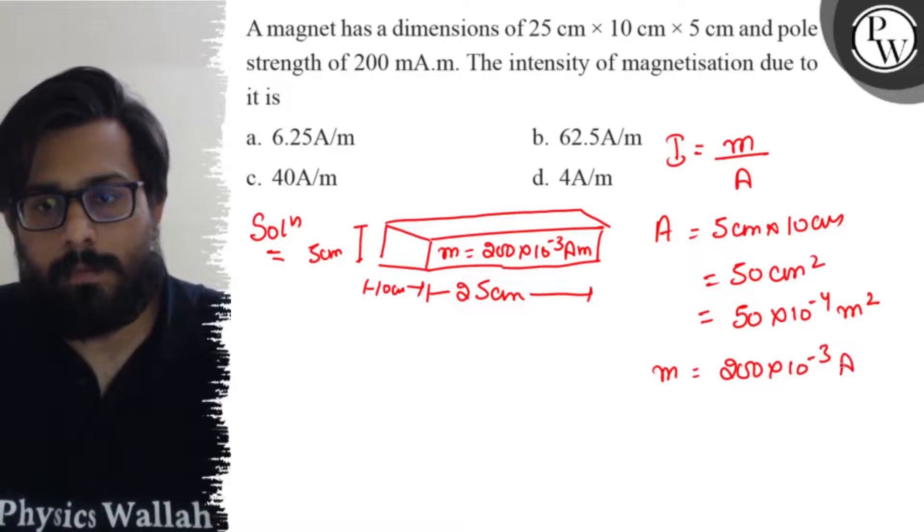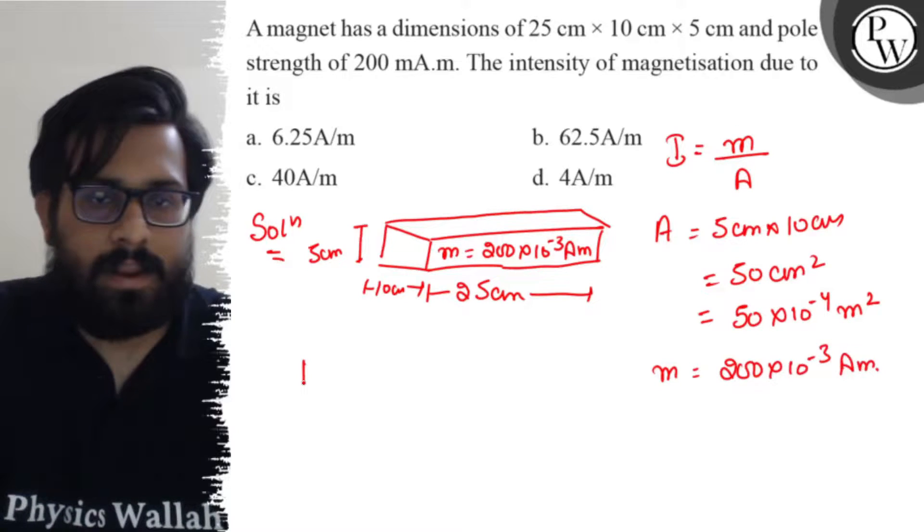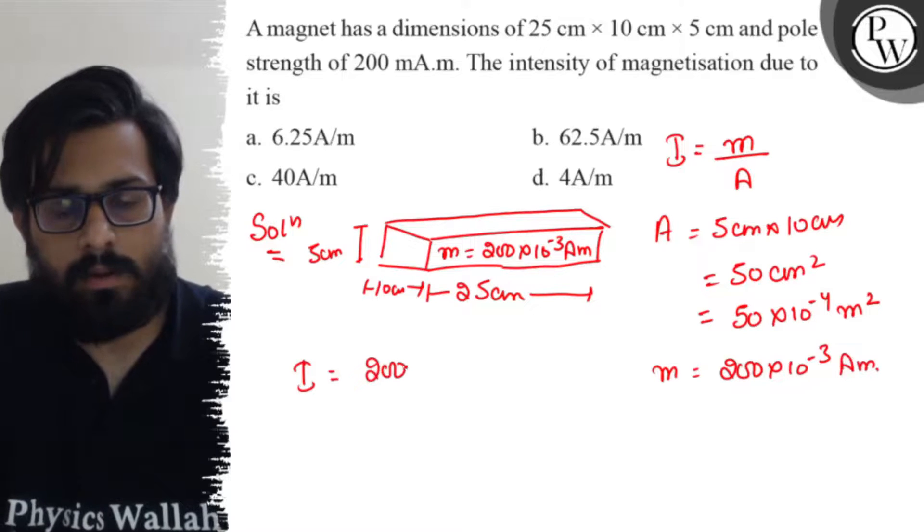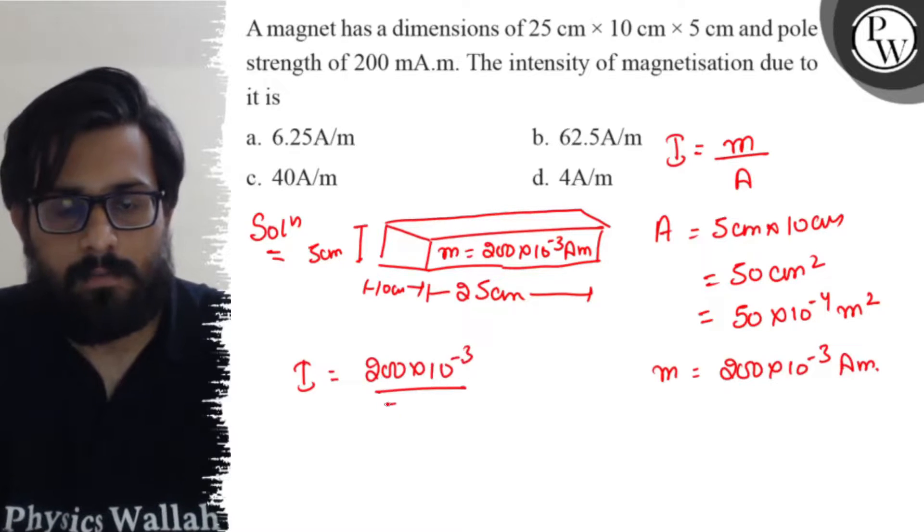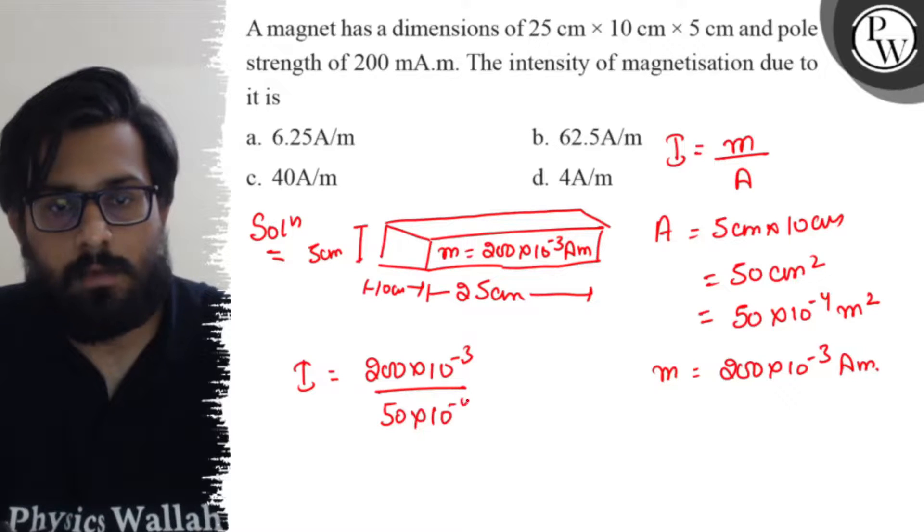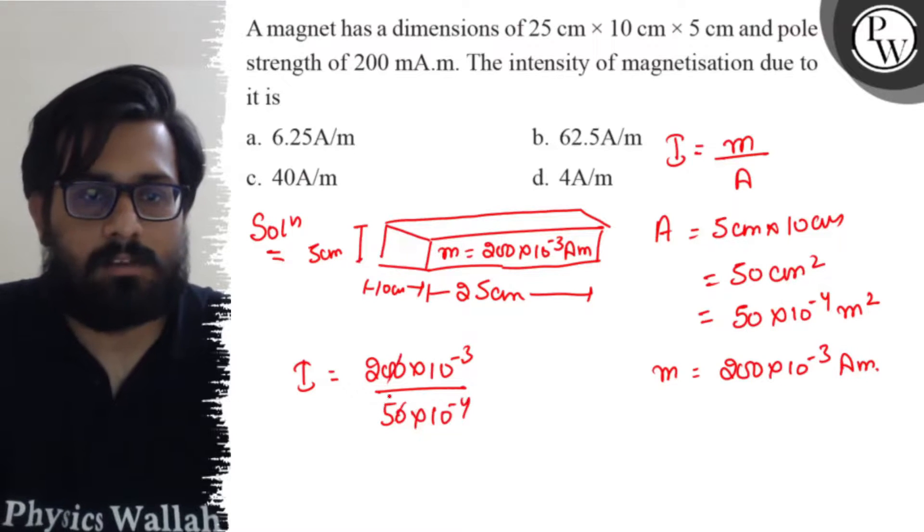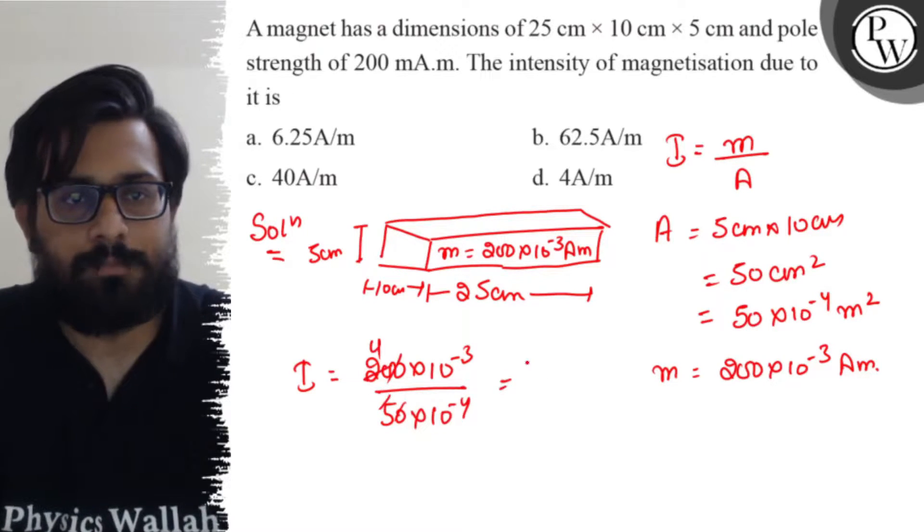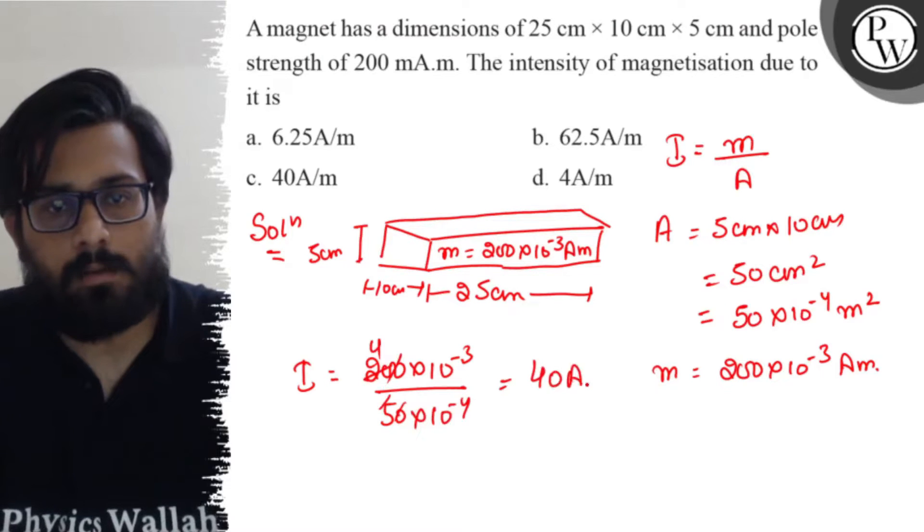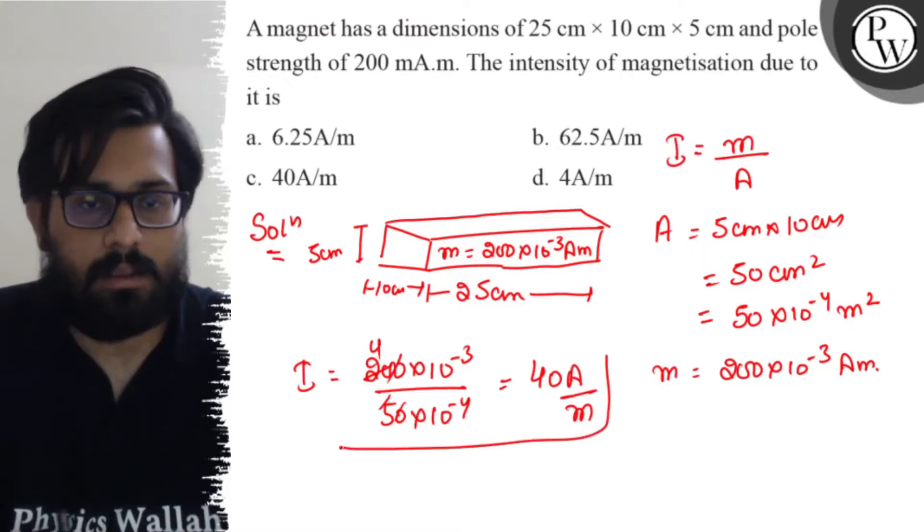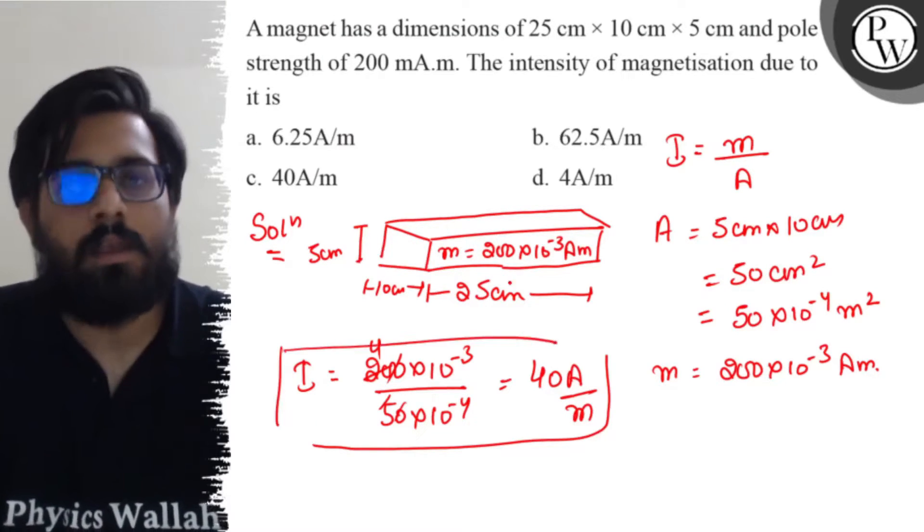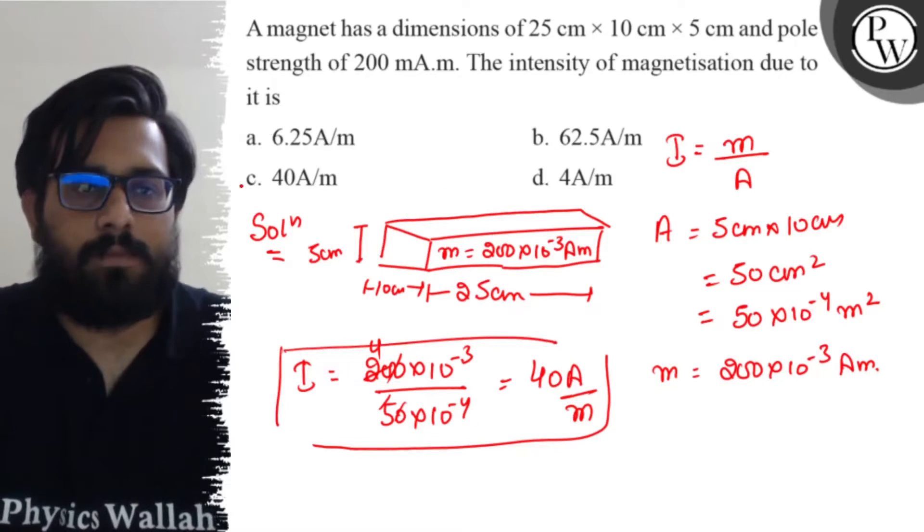So intensity can be written as 200 × 10^-3 divided by 50 × 10^-4. The zeros cancel out, 200 divided by 50 is 4, and it comes to 40 ampere per meter. This is your final answer. The value of intensity of magnetization comes out to be 40 ampere per meter.